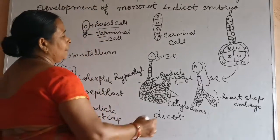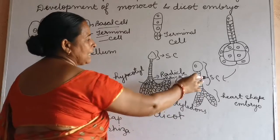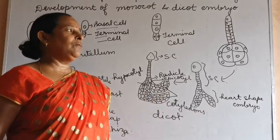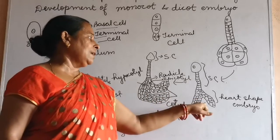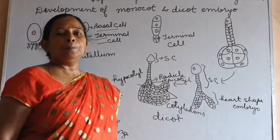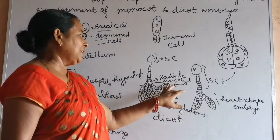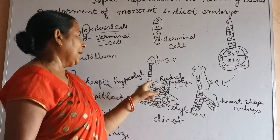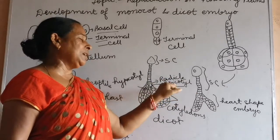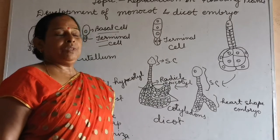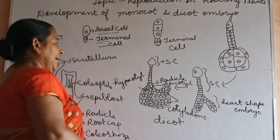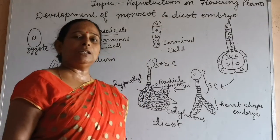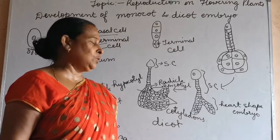After that, it may develop into a suspensor cell, whereas this octate formation — the octate cells may undergo formative division and they may form a heart-shaped embryo. After that, this embryo may develop into a radicle, and in between you will get the epicotyl, which may give rise to the shoot apical meristem.